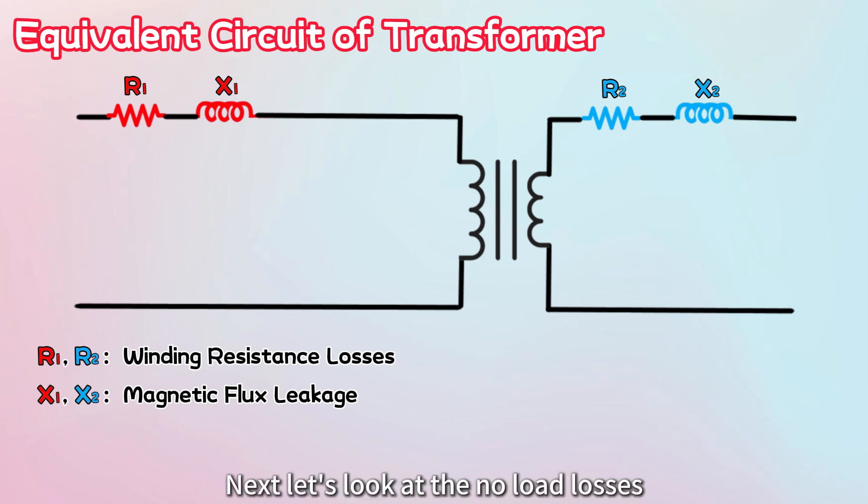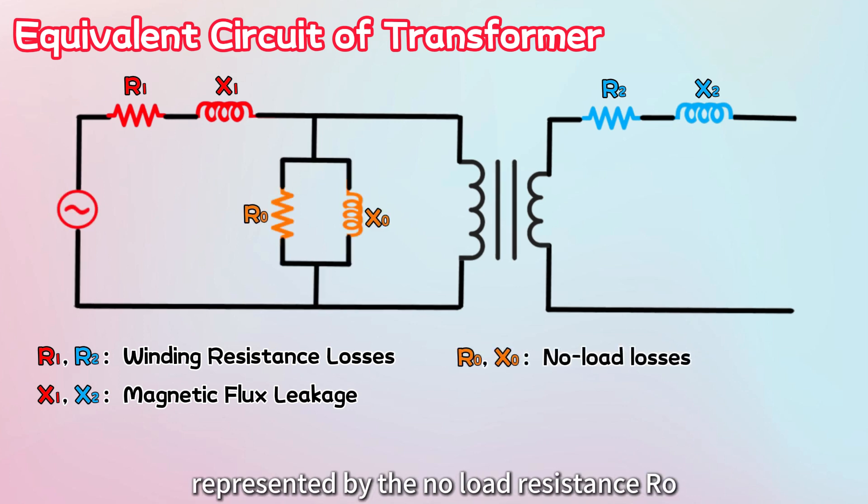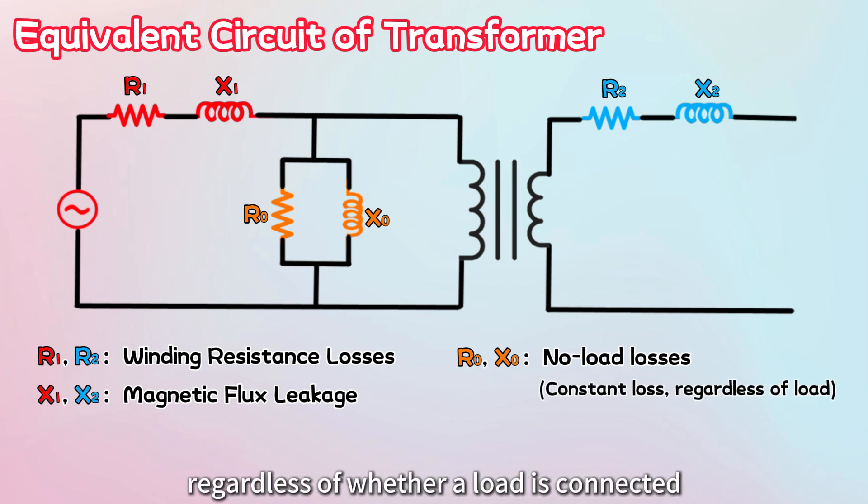Next, let's look at the no-load losses, represented by the no-load resistance R0 and the no-load reactance X0. These losses remain constant, regardless of whether a load is connected to the transformer.